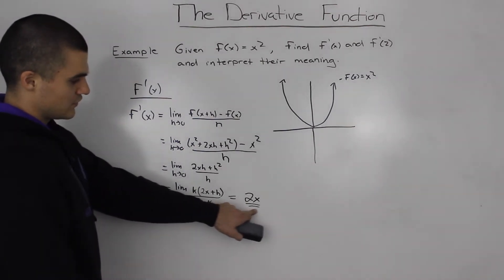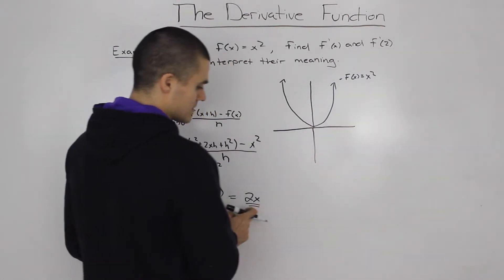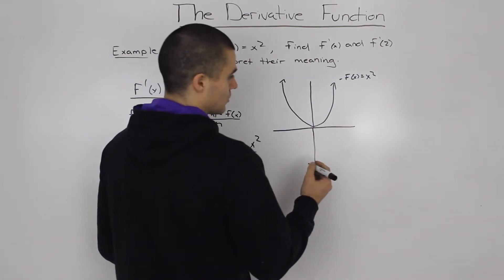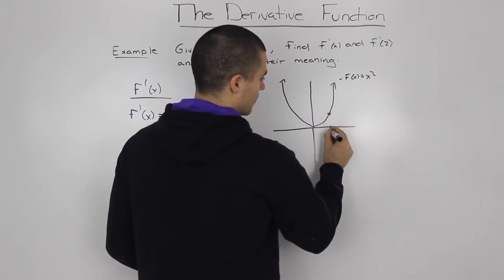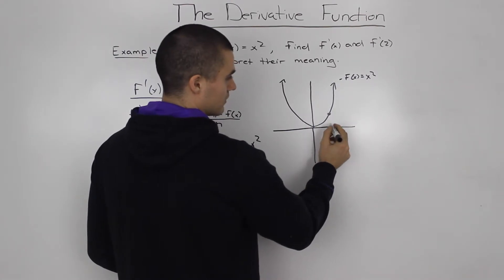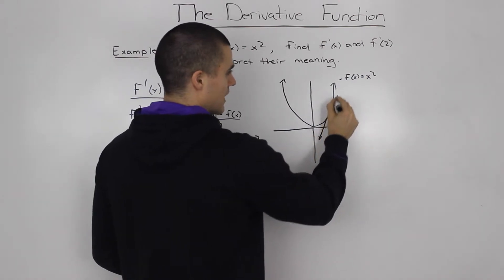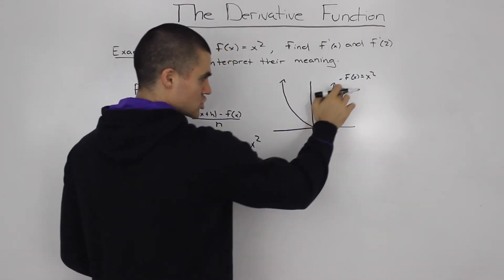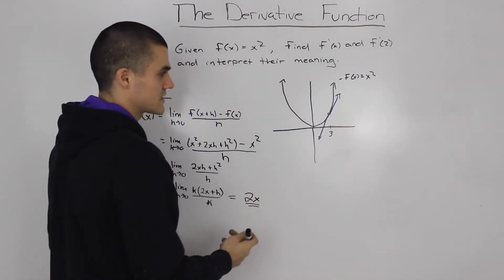This derivative here, this 2x, gives you the slope of the tangent at any point. So, let's say we want to know the slope of the tangent at 3. Well, so we have this tangent here. At point 3, the slope of this line, this tangent, will be 6. 2 times 3 is 6.